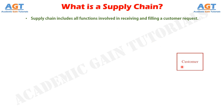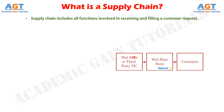Consider a customer walking into a Walmart store to purchase detergent. The supply chain begins with the customer and his or her need for detergent. The next stage of the supply chain is the Walmart retail store that the customer visits. Walmart stocks its shelves using inventory that may have been supplied from a finished goods warehouse or a distributor using trucks supplied by a third party. The distributor in turn is stocked by the manufacturer — Procter & Gamble, also known as P&G — as the manufacturer of detergent in this case.